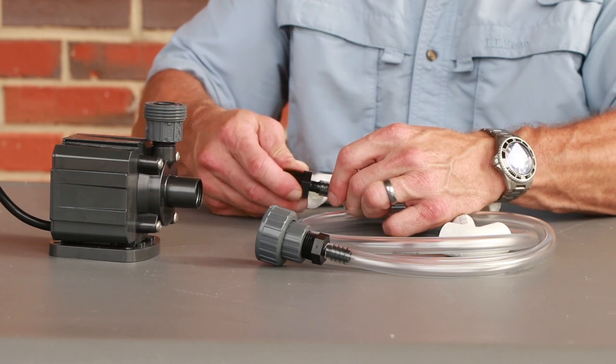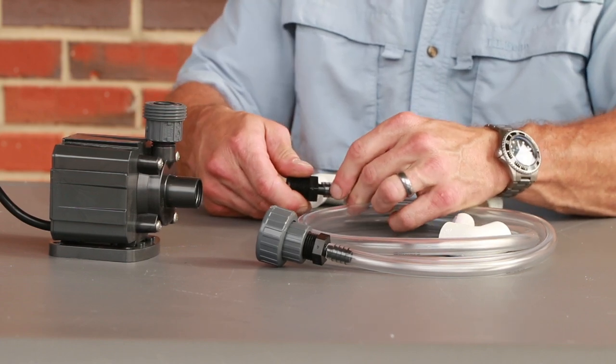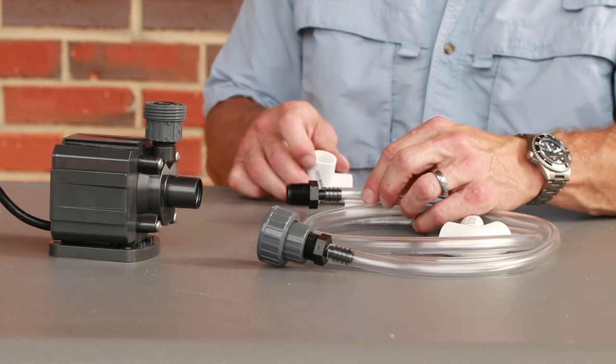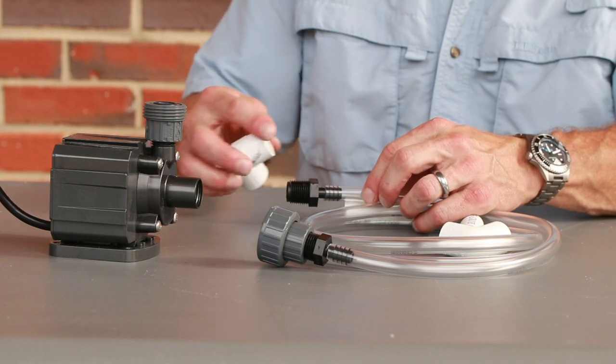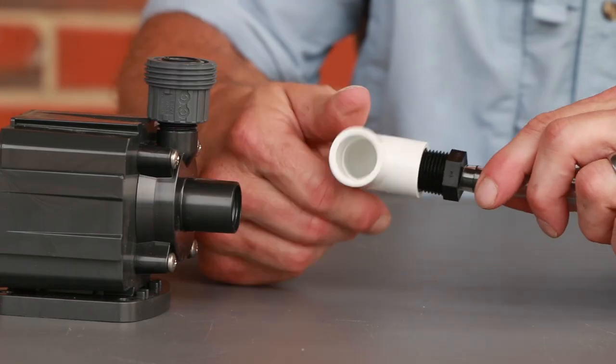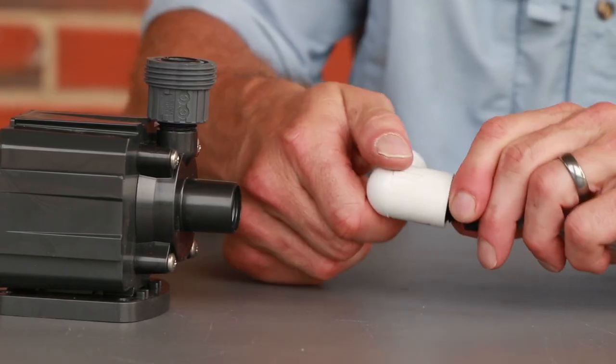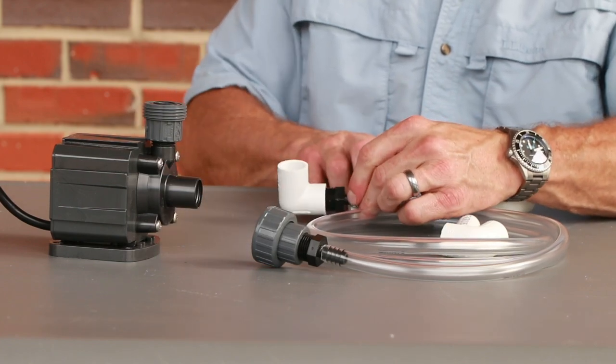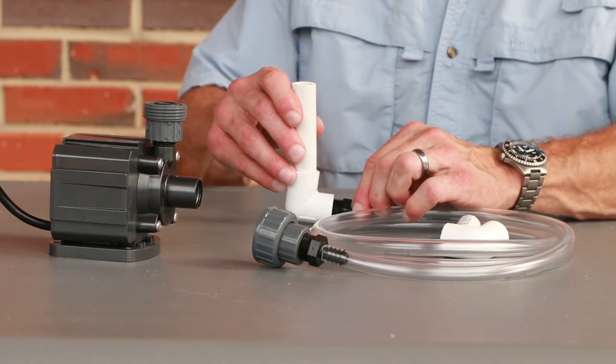On the other end of the three eighths inch tubing, attach a three eighths inch barb to male threaded fitting. Screw the threaded end of the fitting onto a half inch 90 degree elbow threaded on one side and designed as a slip fitting on the other.